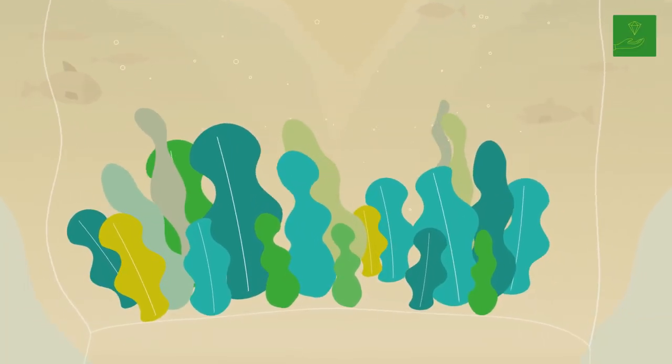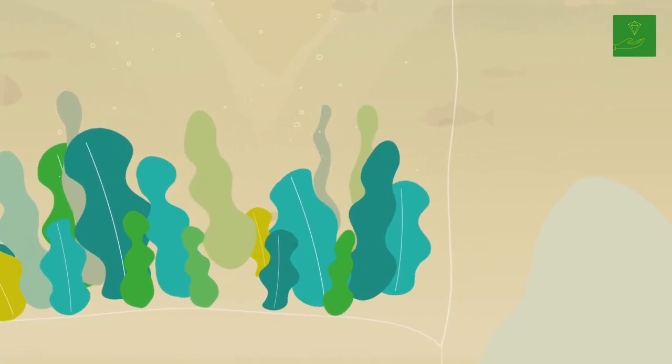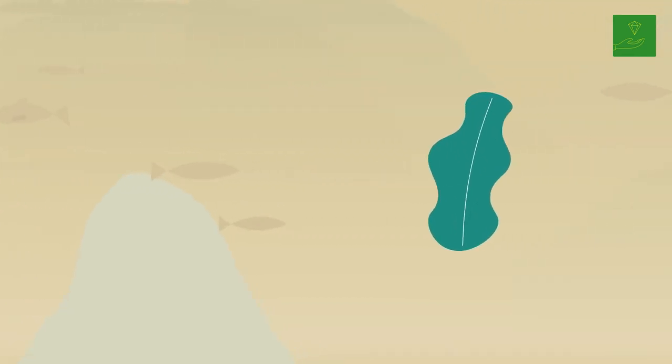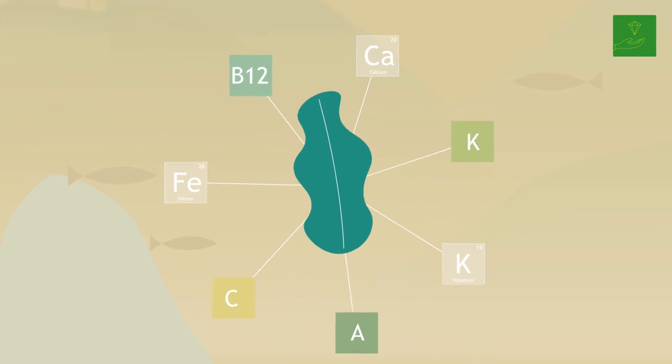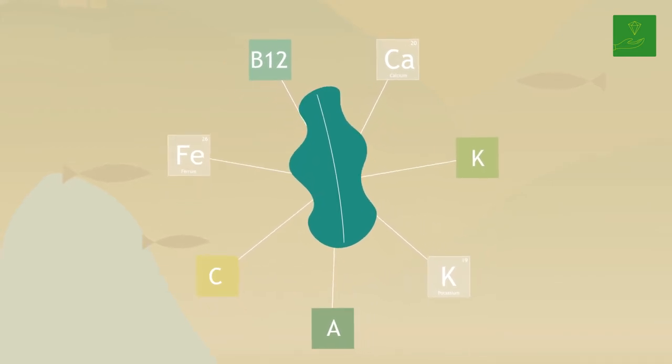Seaweed is one of the natural sources of iodine, contains vitamins, antioxidants, and minerals like calcium and iron, and polyunsaturated fatty acids, which are essential for the human body.